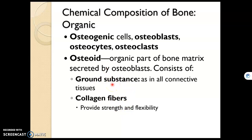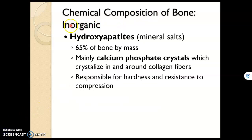We need something else in order to make bone a solid structure, not just the organic portion of the composition. The inorganic composition of bone we must take in from the outside. Those are mineral salts, or hydroxyapatites. Mineral salts are calcium and phosphate crystals. When they join with the osteoid, we form a hard substance that's resistant to compression.